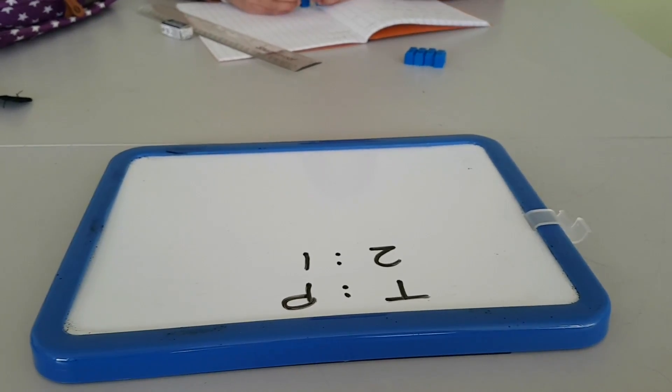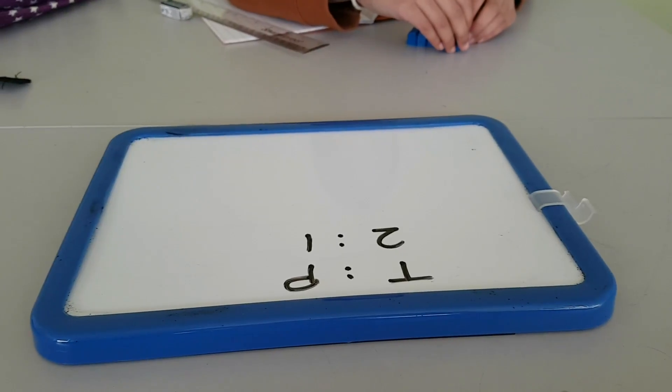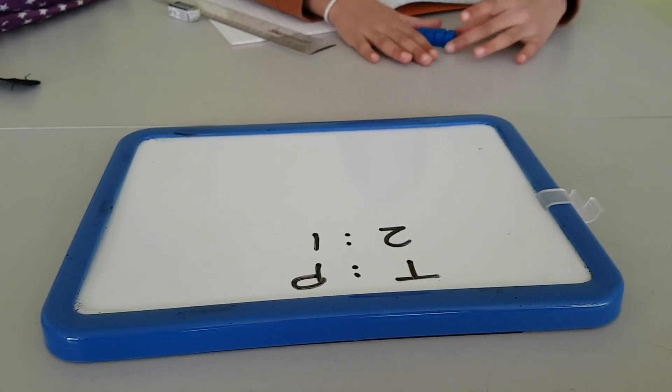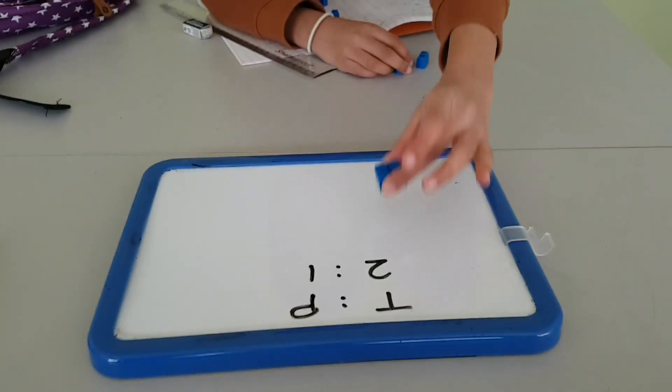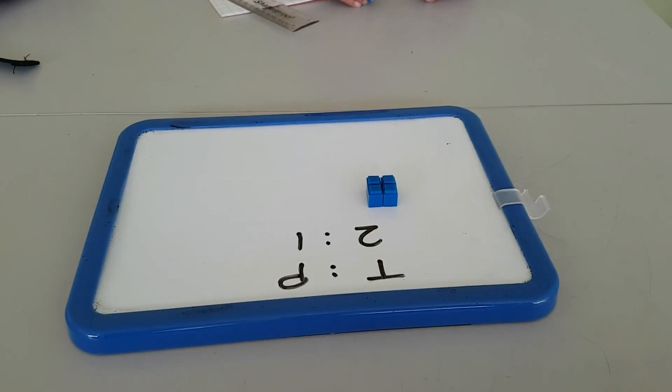You have 12 counters. You're sharing in the ratio 2 to 1, right? So can you start sharing that in the ratio 2 to 1?